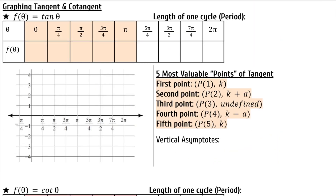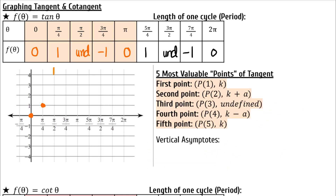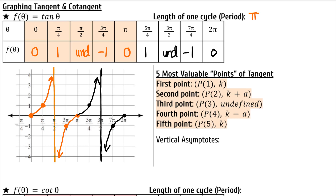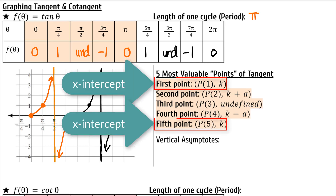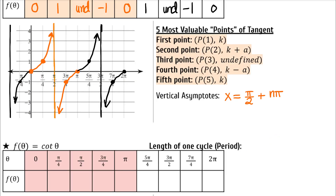Let's use the unit circle to fill out the following table for tangent. Now graph tangent below. Tangent also has periodic repetition like sine and cosine, but tangent begins to repeat values after π. So the period of tangent is π. The five MVPs of tangent include two x-intercepts and a vertical asymptote directly in between. The next vertical asymptote is at 3π/2. Following the pattern, the vertical asymptote to the left will be at −π/2. Each vertical asymptote can be found by taking the first asymptote, π/2, and adding any additional amount of π.